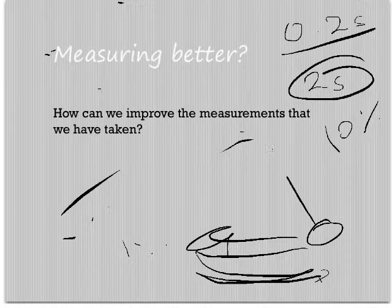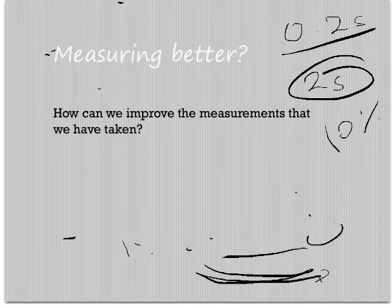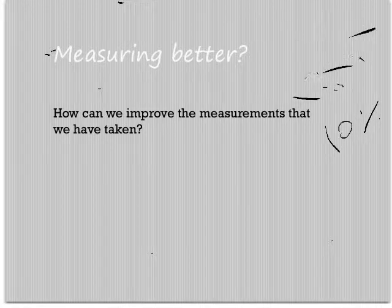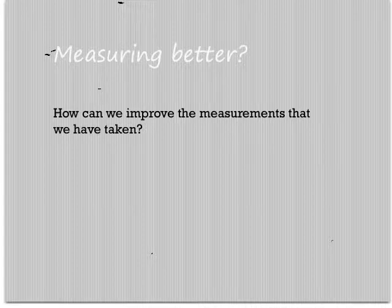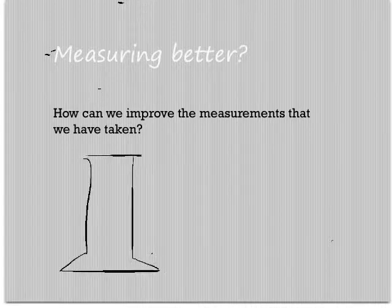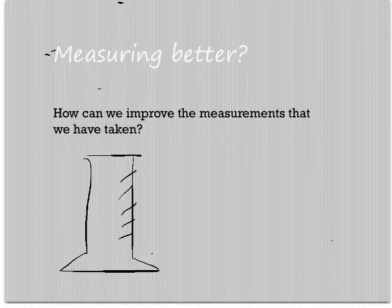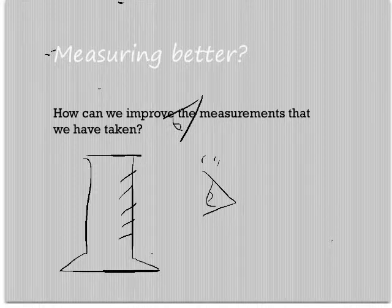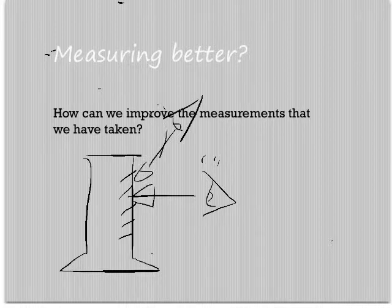The other ones to remember are ones like parallax, which is making sure that you're looking at your scale at 90 degrees. So here's my measuring cylinder - you've got your scale up the side. When you're looking with your eye, you look at it straight on like that instead of at an angle. That's parallax.